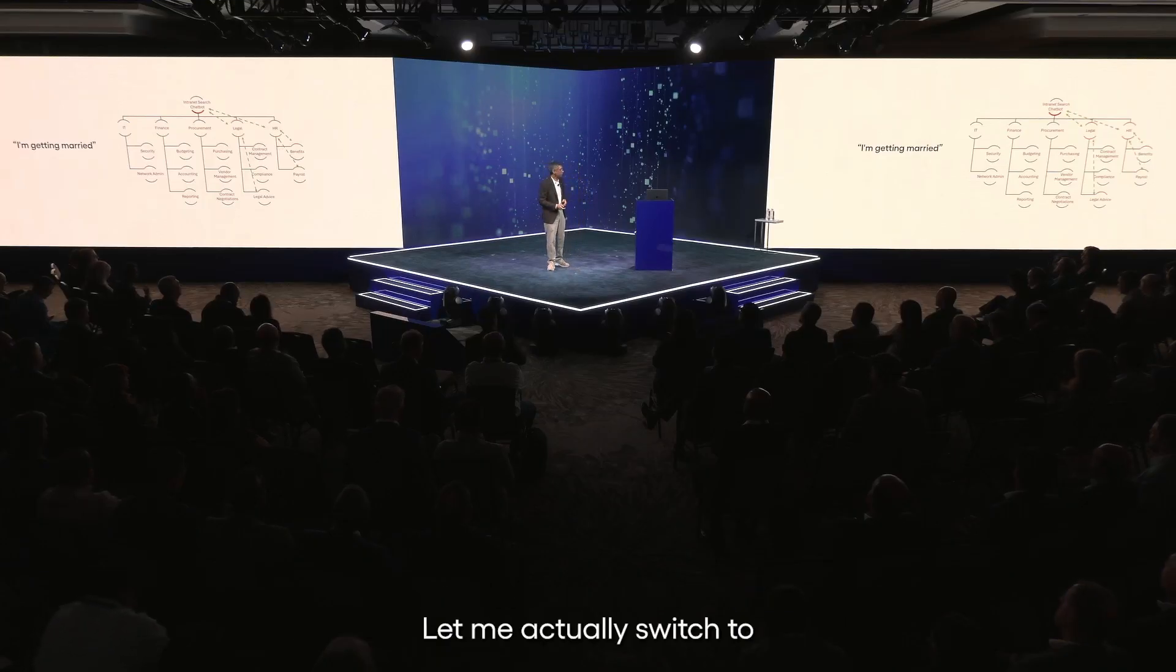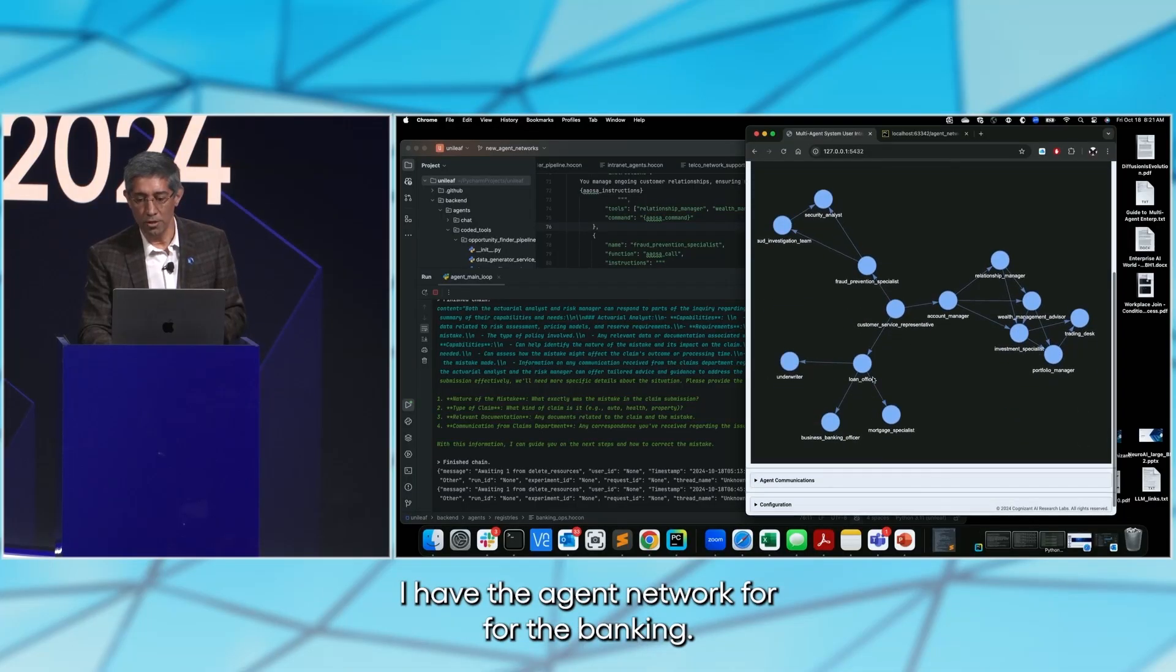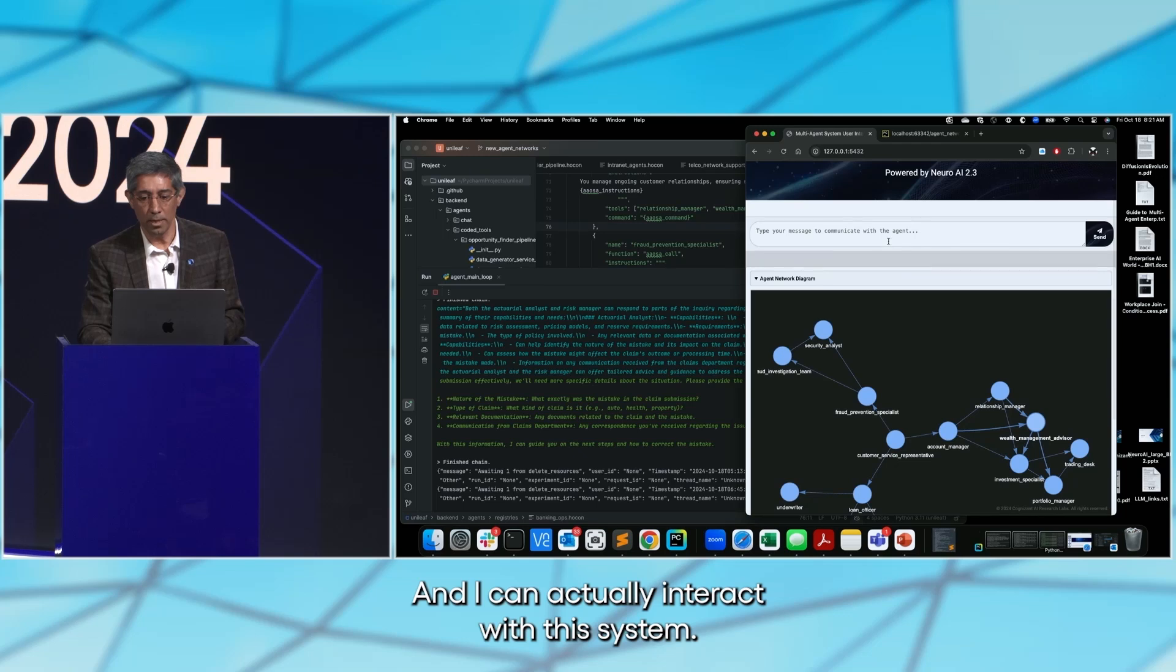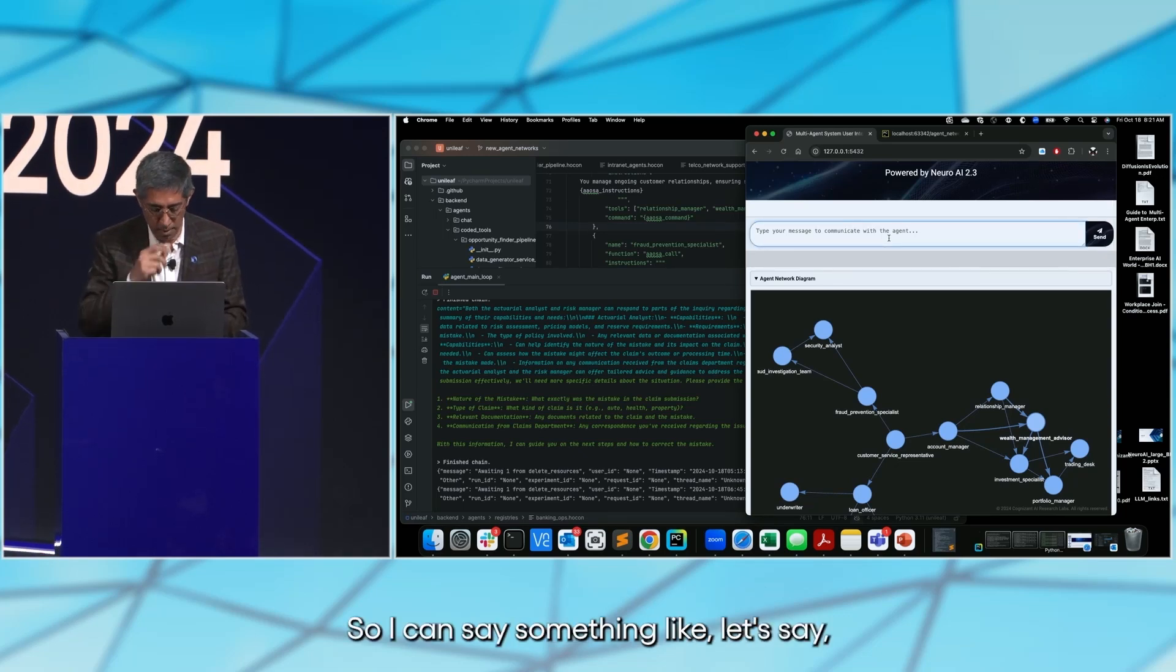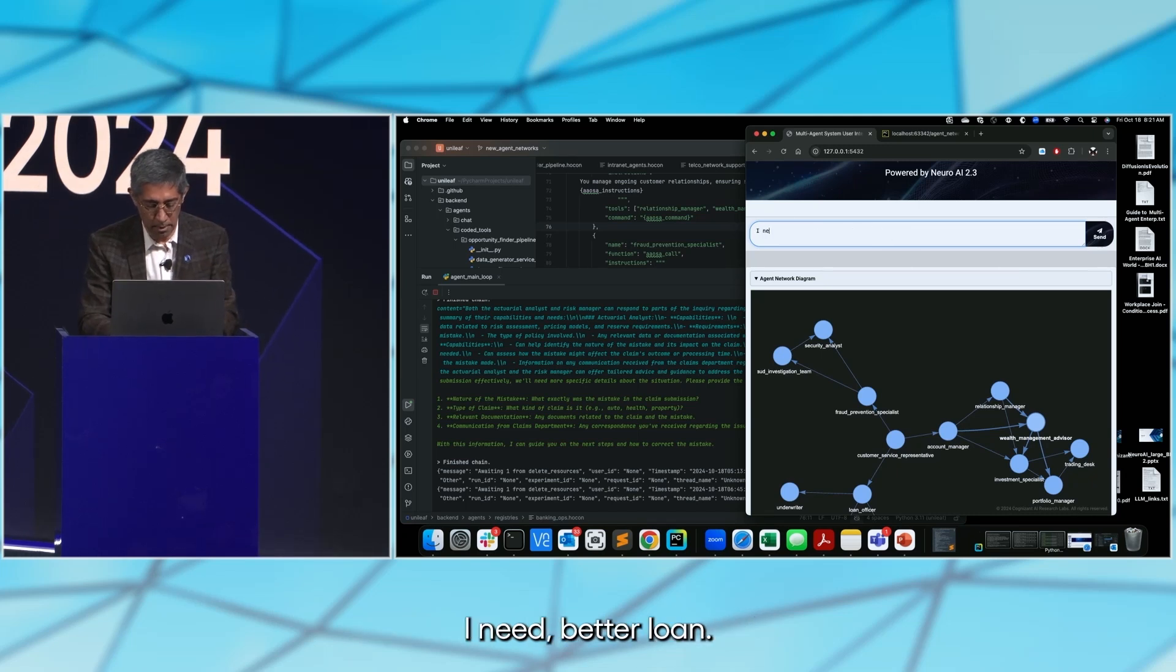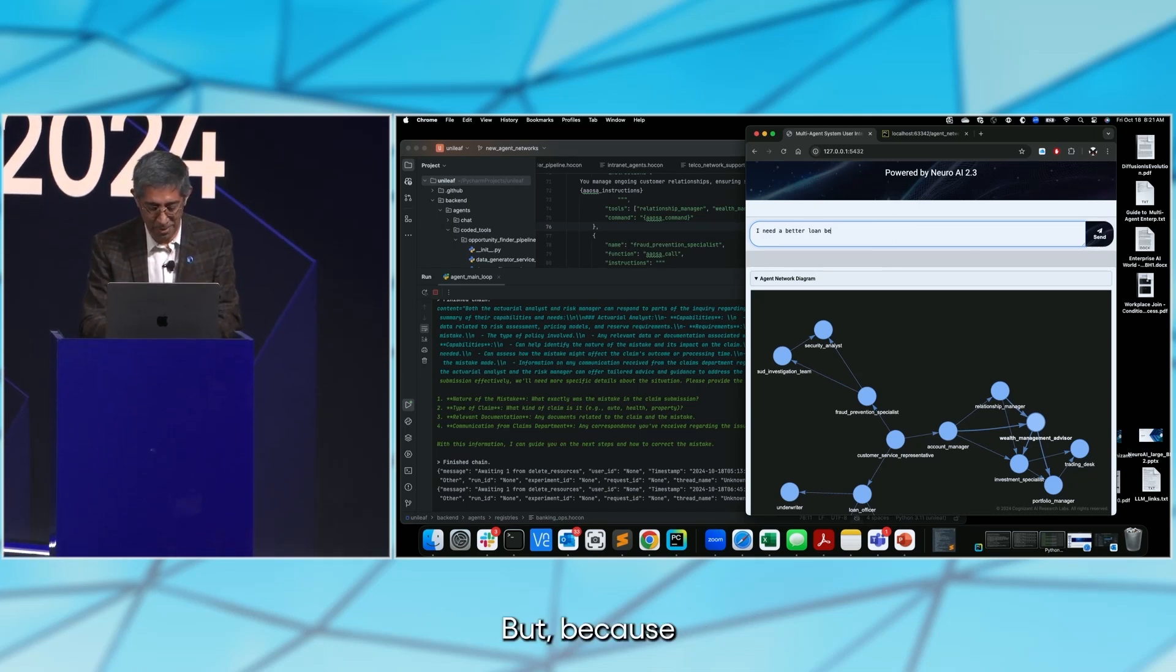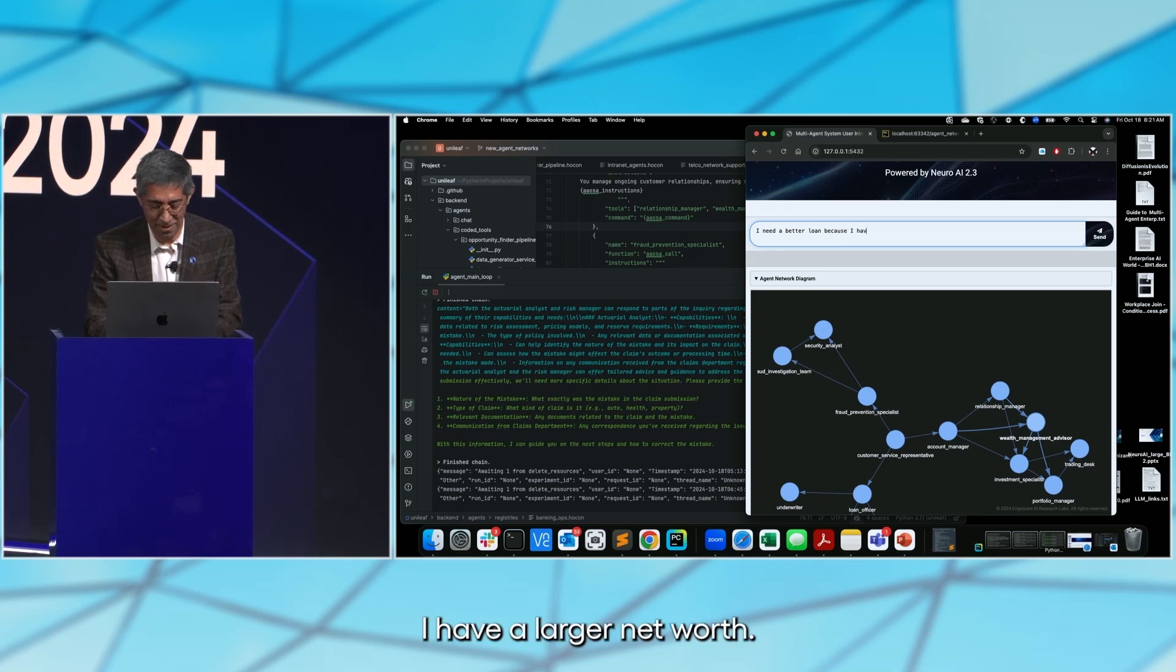Let me actually switch to a demo. Here we go. I have the agent network for the banking, and I can actually interact with this system. So I can say something like, I need a better loan because I have a larger net worth.